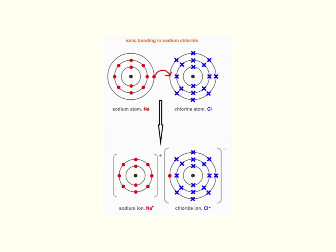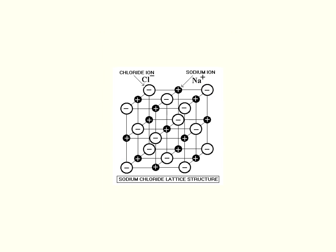These two ions will now attract each other because they have opposite charges, and that's the ionic bond. If we look at this diagram now, we've got the positive sodium ion and the negative chloride ion.